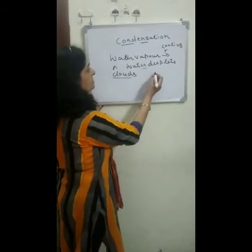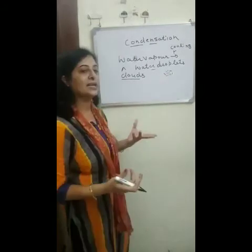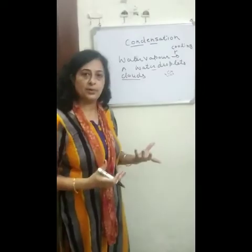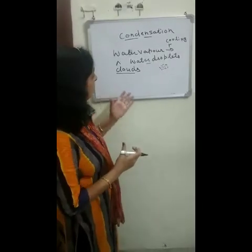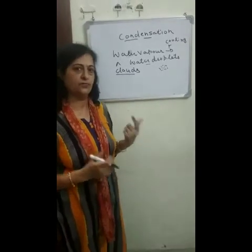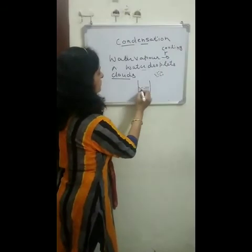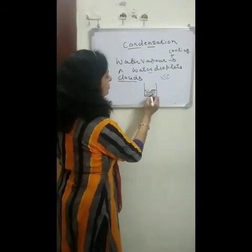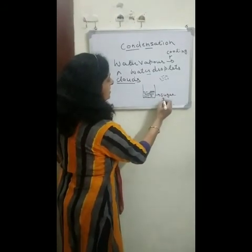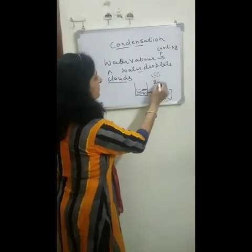Clouds are formed after the processes of evaporation and condensation. After condensation, when the water droplets combine together, they form clouds. Sometimes, when we have to separate different components of a mixture, we need to use more than one method of separation. For example, if we want to separate sugar mixed with water, we can use the process of evaporation to get the sugar back.